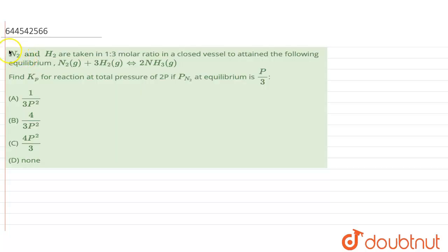Hello everyone, so in this question it is given that nitrogen and hydrogen are taken in 1 to 3 molar ratio in a closed vessel to attain the following equilibrium: N2 plus 3H2 giving 2NH3. Find Kp for the reaction at total pressure of 2P if PN2 at equilibrium is given as P by 3.